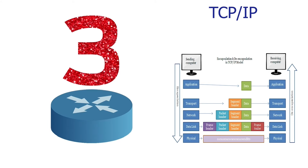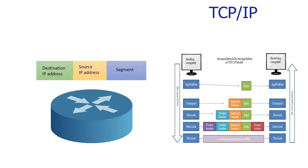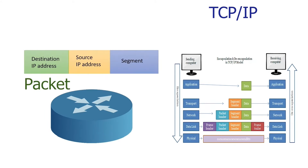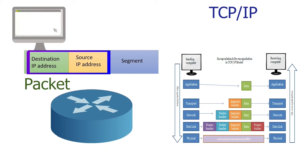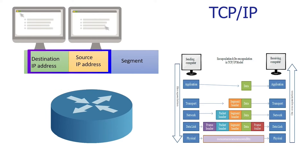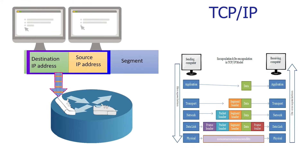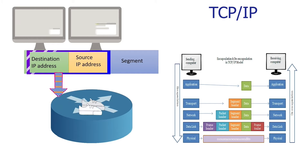A router is a layer 3 device. Layer 3 processes data in the form of packets. A packet contains the software address of the source and destination devices. Just like a switch uses hardware addresses to make forwarding decisions, a router uses software addresses to make forwarding decisions.